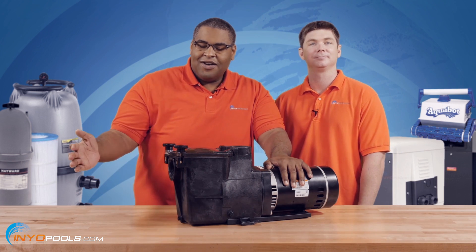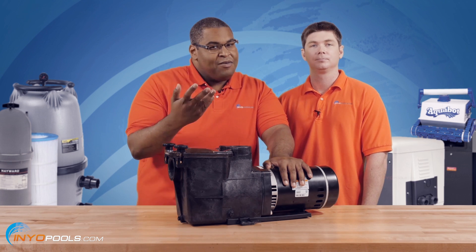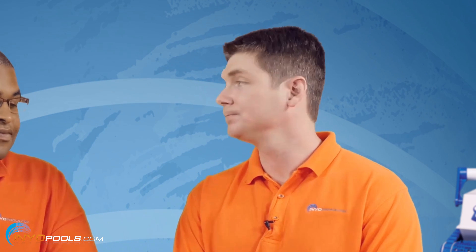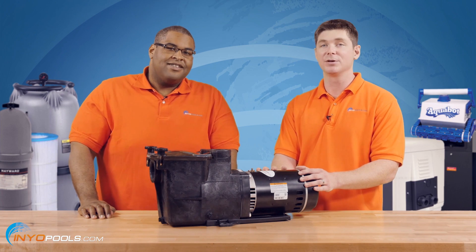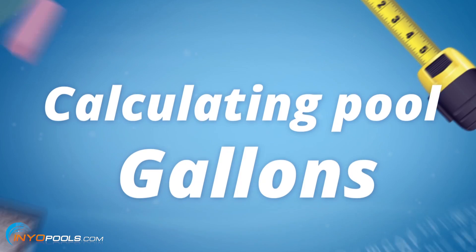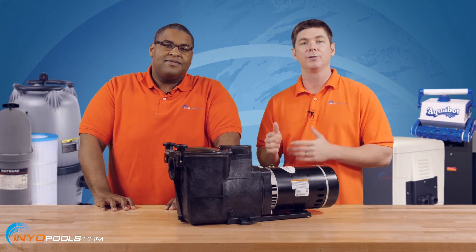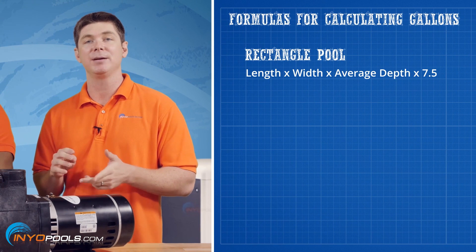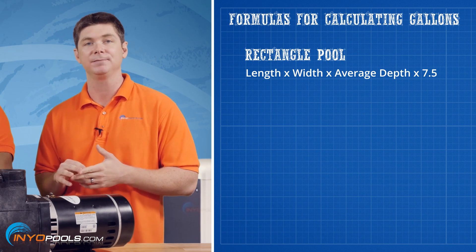Water comes in through the in port and out the out port. To select a pool pump for you, we have to find out some things about the pool, like the size. So the first thing we'll do is determine the gallons. For a rectangle pool, you go length times width times average depth times 7.5.